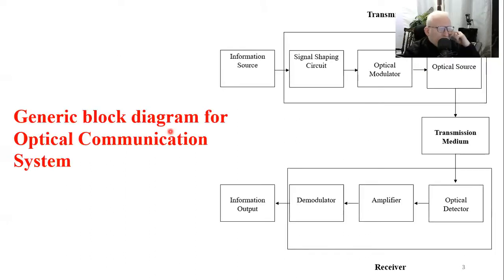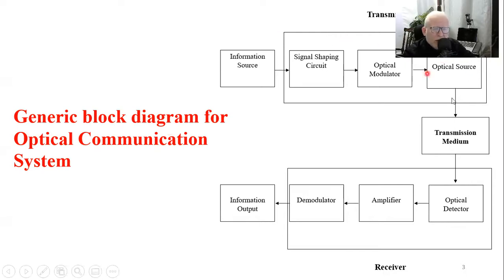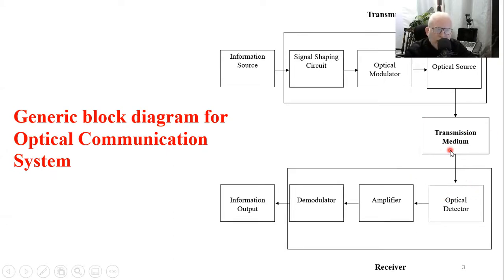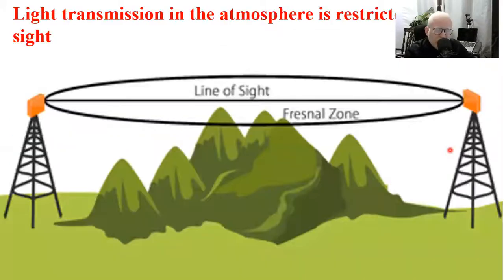This is a full transmitter-receiver block diagram for an optical communication system. As we mentioned, this is a copy-paste slide from lecture number zero, where we have the optical modulation block using a laser as an optical carrier. We have a receiver or demodulator on the other side, and in between, we have a transmission medium. This transmission medium can be an unguided air medium.